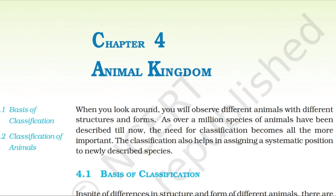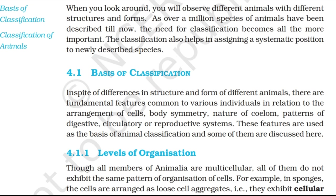Textbook of Biology Class 11, Chapter 4: Animal Kingdom, narrated by Priyadarshini Hara. When you look around, you will observe different animals with different structures and forms. As over a million species of animals have been described till now, the need for classification becomes all the more important. Classification also helps in assigning a systematic position to newly described species.